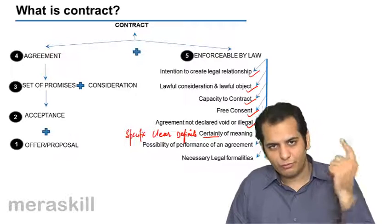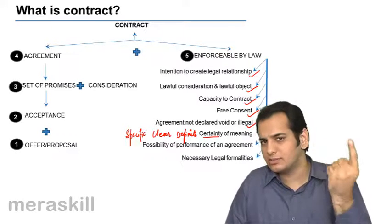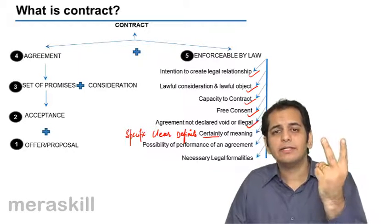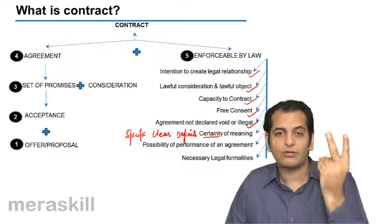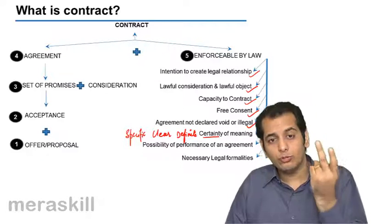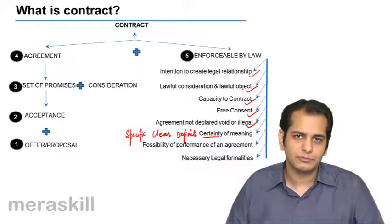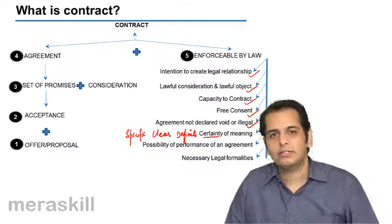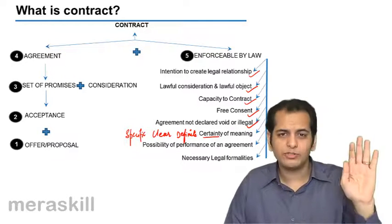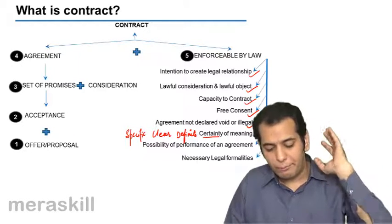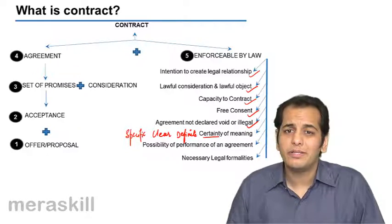So there are two situations in impossibility. First, impossibility exists at the time the contract was made — the contract is void from the start. Second, impossibility creeps in after some time — it was not present when the contract was made, so the contract becomes void at a later stage. All contracts in which performance is impossible are void, so possibility of performance is an essential requirement for a contract to be enforceable by law.